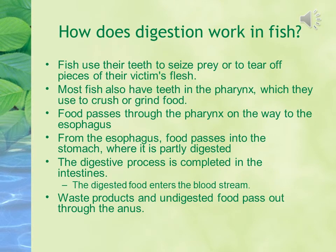Fish use their teeth to seize prey or to tear off pieces of their victim's flesh. Most fish also have teeth in the pharynx, which they use to crush or grind food. Food passes through the pharynx to the esophagus, then into the stomach where it is partially digested. Digestion is completed in the intestine, nutrients enter the bloodstream, and waste products pass out through the anus.